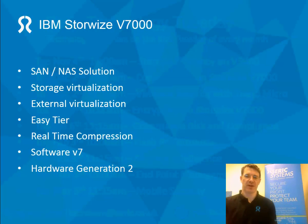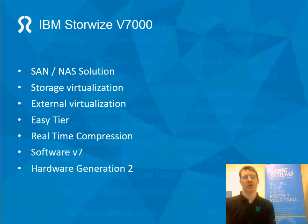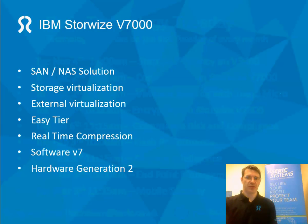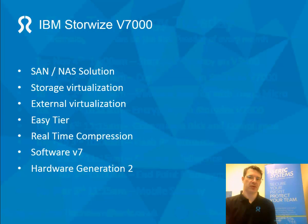The Storwize V7000 — if you're not aware of it, we've done some sessions previously, all available on our YouTube channel. Roughly it's a mid-range storage device that can come in a SAN or NAS solution. It supports storage virtualization and external virtualization, meaning it can manage your existing storage and give advanced functionality to the disks you already have. EASY-T puts the most frequently accessed data onto SSD, and real-time compression can achieve above 50% space savings — 50% is guaranteed. It's currently on software version 7 and hardware generation 2.